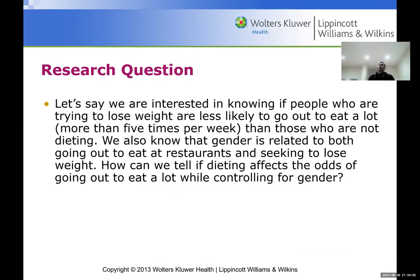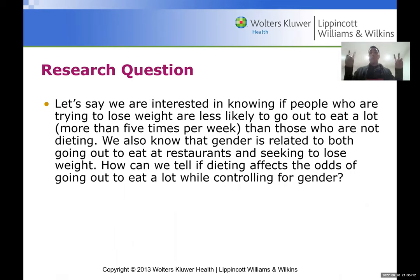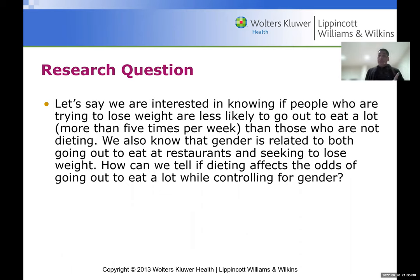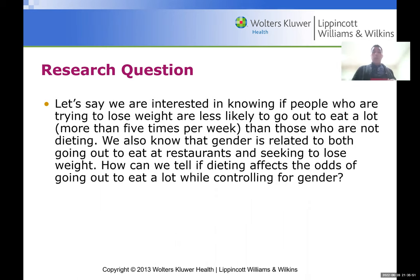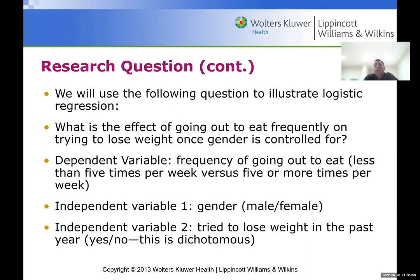What type of research question can we ask for logistic regression? Let's say we're interested in knowing if people who are trying to lose weight are less likely to go out to eat a lot — defined as more than five times per week — compared to those who are not dieting. We also know that gender is related to both going out to eat at restaurants and seeking to lose weight. The question is: how can we tell if dieting affects the odds of going out to eat a lot while controlling for gender?